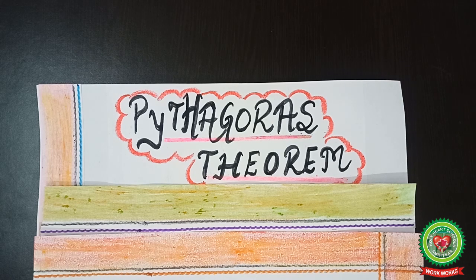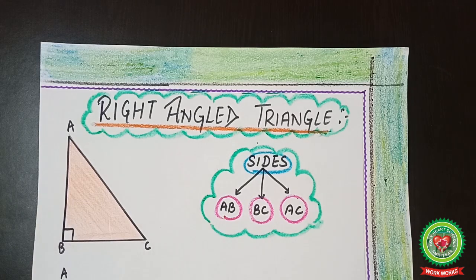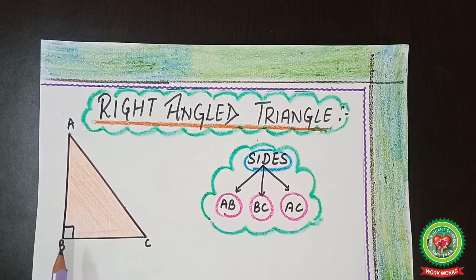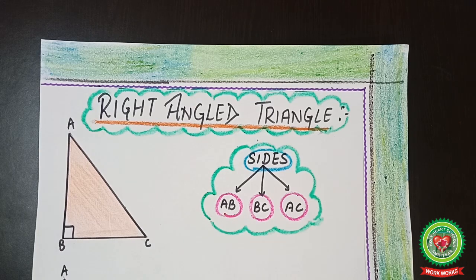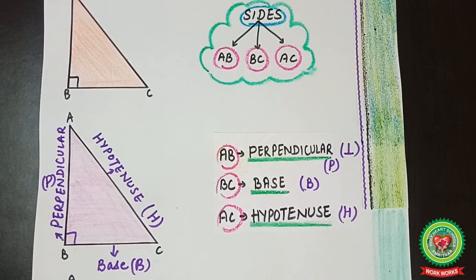Pythagoras theorem does not apply to all triangles — it only applies to right-angle triangles. So before starting our topic, we will recall the right-angle triangle. Right triangles always include one right angle, which is usually marked as a square box to help you identify it. Here you can see the three sides: AB, BC, and AC. These three sides of the right-angle triangle have specific names.